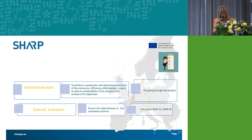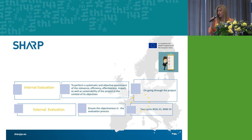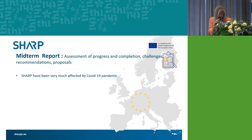The SHARP evaluation consists of two parts: the internal and external evaluation. Internal evaluation was an ongoing process throughout the project, and the external evaluation was conducted by a subcontractor in two cycles. The first cycle covered the period from month 26 to 32, and the second cycle was six months before the end of the project — that means month 48 to month 54.